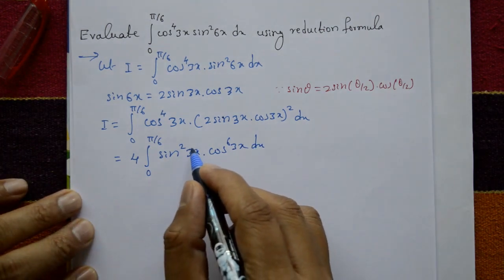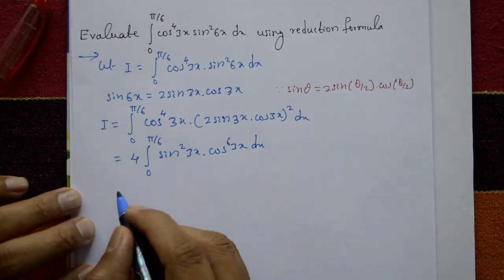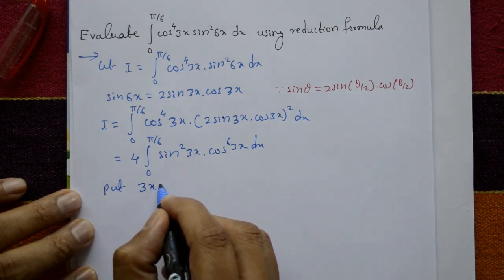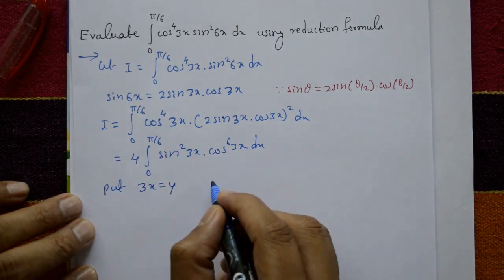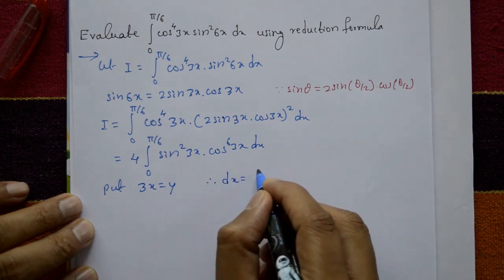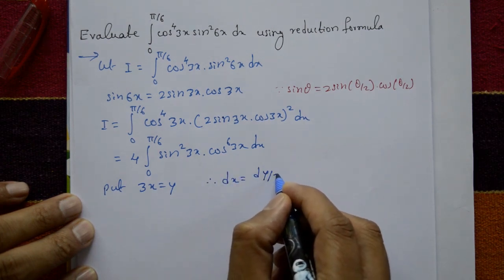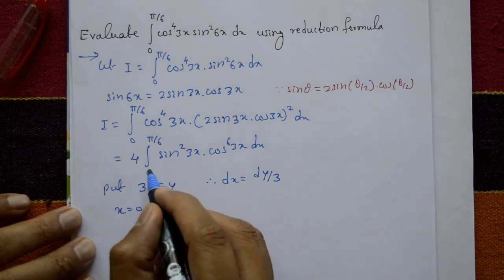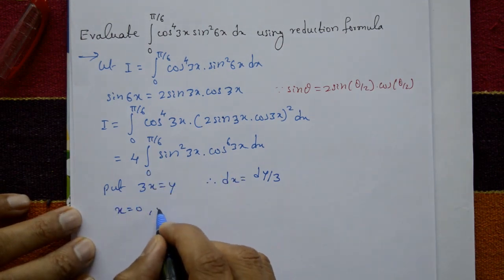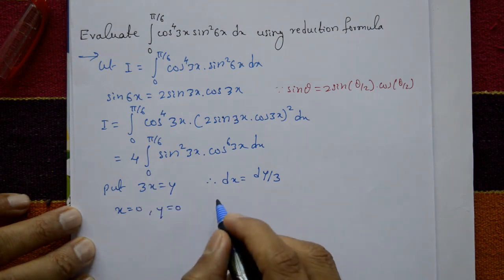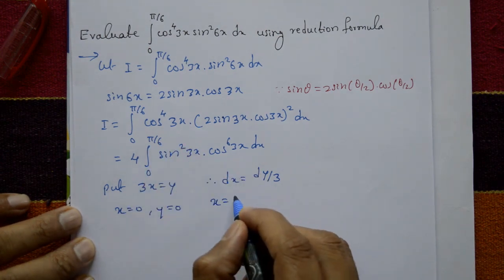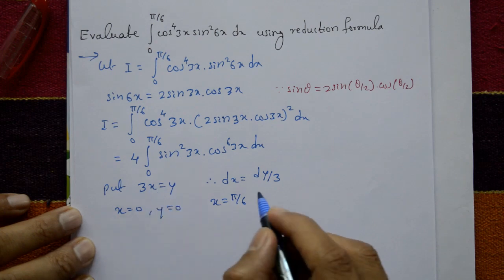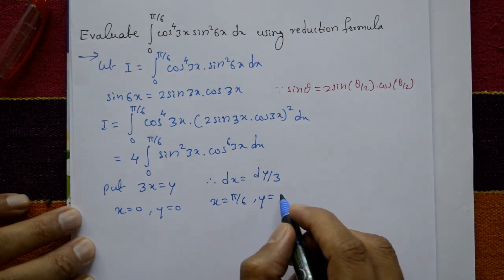Now put 3x = y, so dx = dy/3. When x = 0, y = 0 (lower limit). When x = π/6, y = π/2 (upper limit).